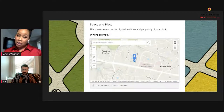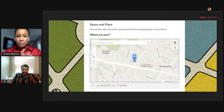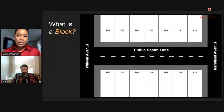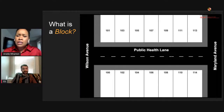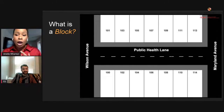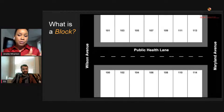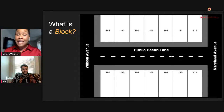After you click on the map, it zooms in and captures your exact location. Within the same page, it's important to define what a block is. For our application, we define a block as the space on a public lane between two intersecting streets — for example, between Wilson Avenue and Maryland Avenue. When you're out on the street assessing your block, don't forget to check both sides.